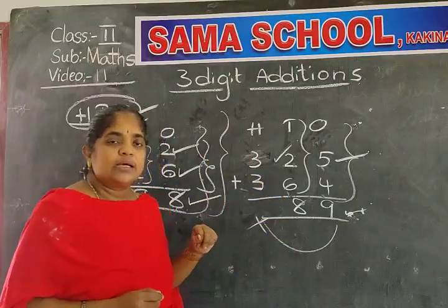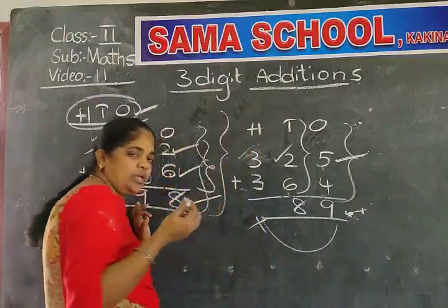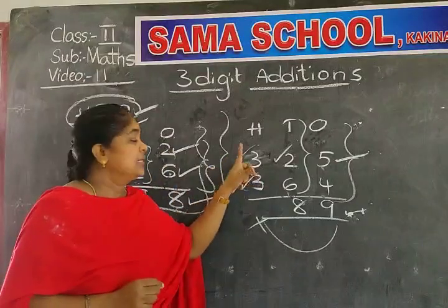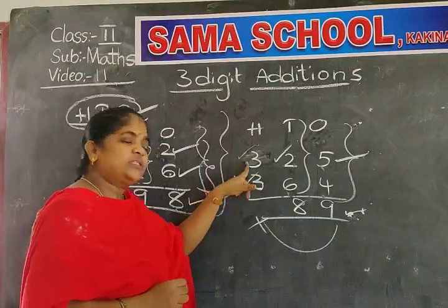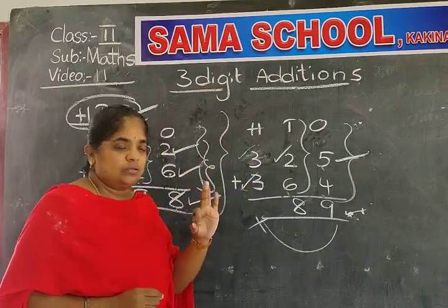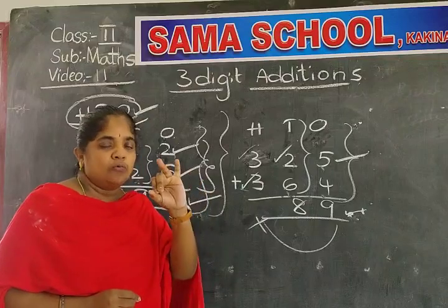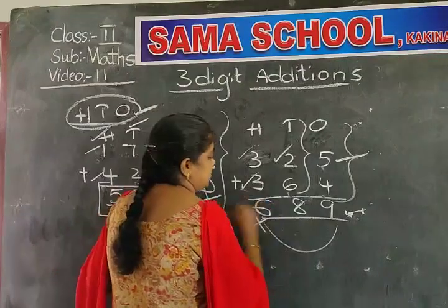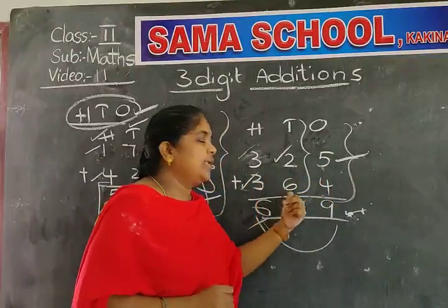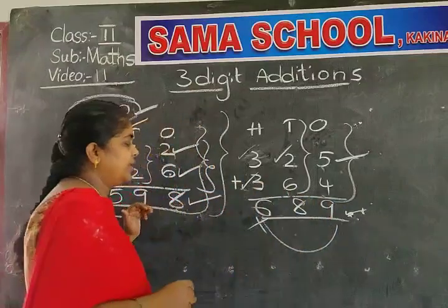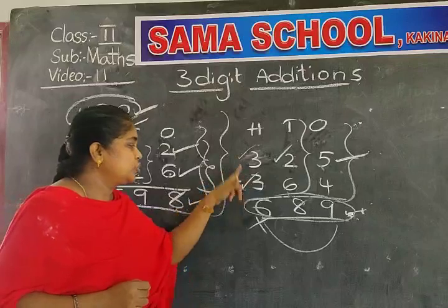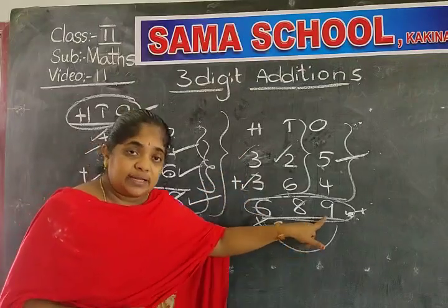Now come to the hundreds place. What is the first number? Three. Second number is also three. Keep three in the mind, take out three fingers. Three after: four, five, six. Three hundred and twenty-five plus three hundred and sixty-four equals six hundred and eighty-nine.